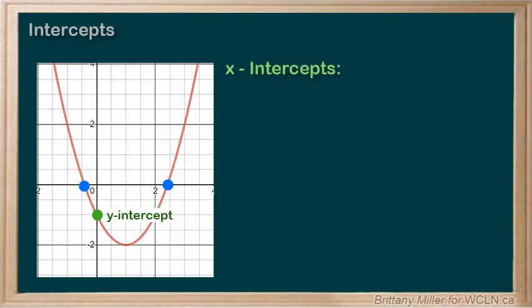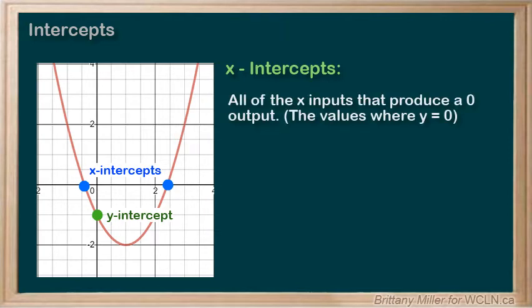We're more interested in x-intercepts, where the function crosses the x-axis. These are all of the different x-inputs that produce a 0 output, and we can have more than one.